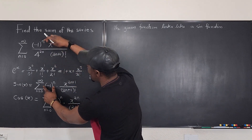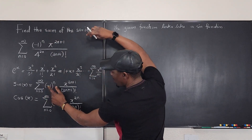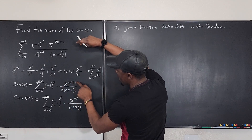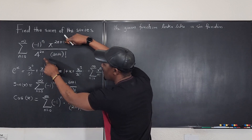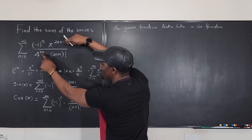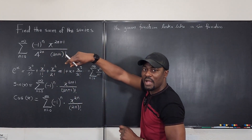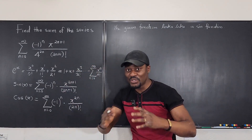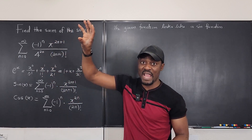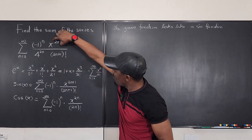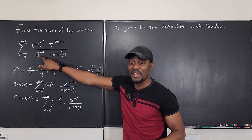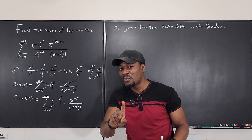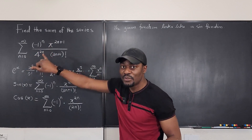Let's compare. The sine series has negative one to the n — does our series have it? Yes. It has something to the power (2n+1) — does ours? Yes. But there's a problem: we have a factor of 4 to the 2n just hanging out. Everything inside the sine function has to be raised to the power (2n+1). So we need to manipulate that 4 to the 2n term.